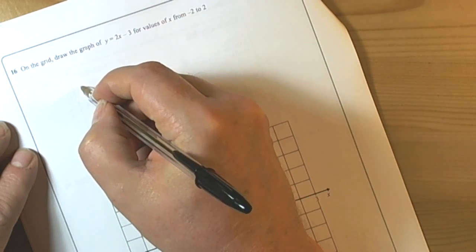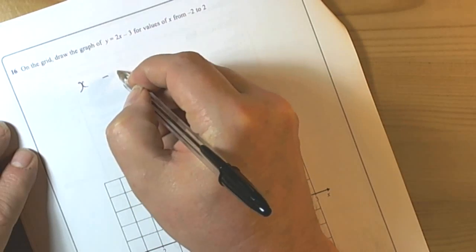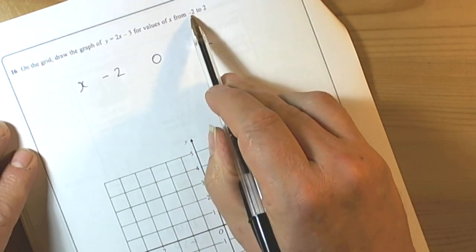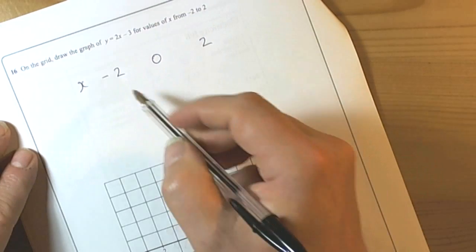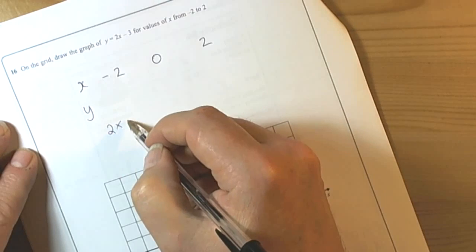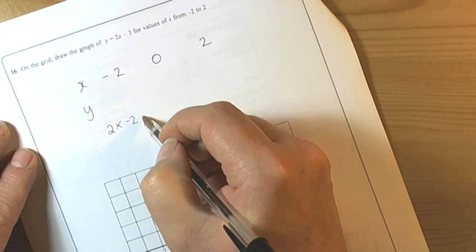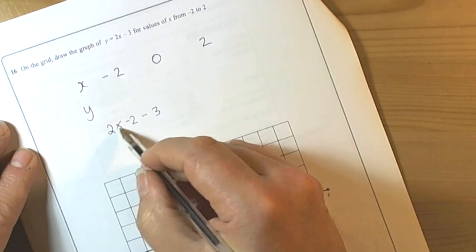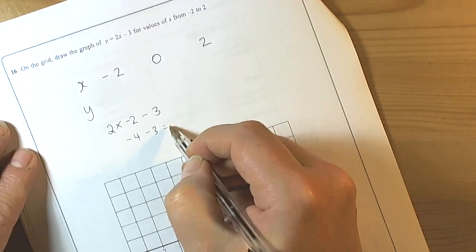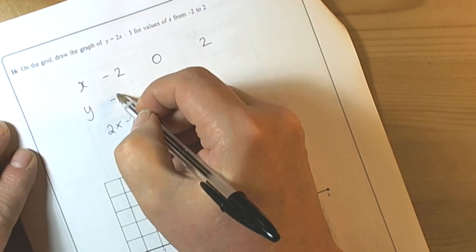So if we keep some simple numbers, x can be negative 2, 0, and 2, because it wants us to go across from minus 2 to 2. So the y number is twice the x number, so in this case 2 lots of negative 2, and then take away 3. 2 lots of negative 2 is negative 4. If we take away the 3, we then end up with negative 7.